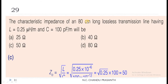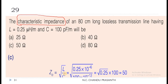Question 29: The characteristic impedance of an 80 cm long lossless transmission line having L = 0.25 microhenry per meter and C = 100 picofarads per meter will be. This relates to electromagnetic theory. We find Z0 = √(L/C), where L = 0.25×10⁻⁶ and C = 100×10⁻¹². Solving this expression, we get Z0 = 50 ohms — this is the characteristic impedance.